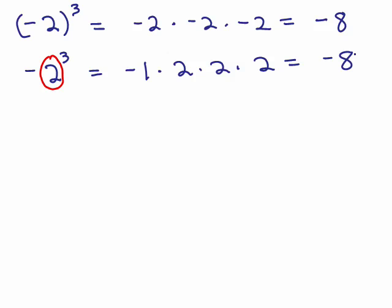What you need to do is work on writing out what they mean. In other words, this middle step here, writing either negative 2 times negative 2 times negative 2 for the first one, or negative 1 times 2 times 2 times 2 for the second one. They both happen to simplify to negative 8, but the reason the answer is negative 8 is not the same for each.